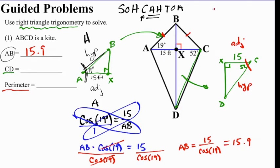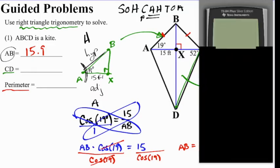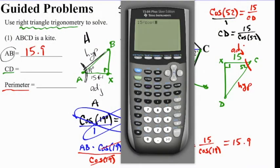So this time it's cosine of 52 degrees is equal to adjacent, which is 15, over hypotenuse, which is CD. So we'll write it as a proportion and cross-multiply. You should find that you get CD is equal to 15 divided by cosine of 52. So we'll plug that into our calculator. And we get that CD is 24.4.